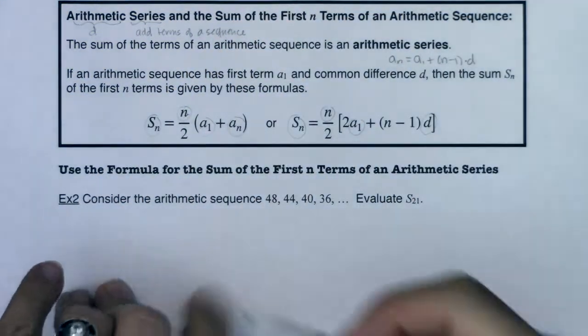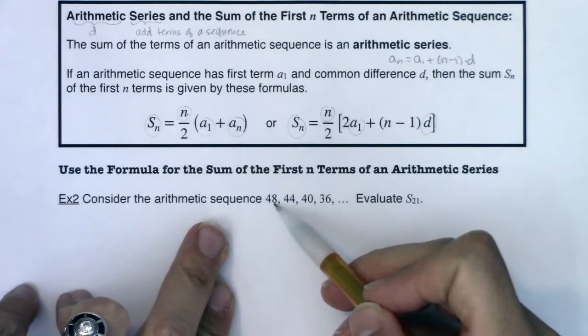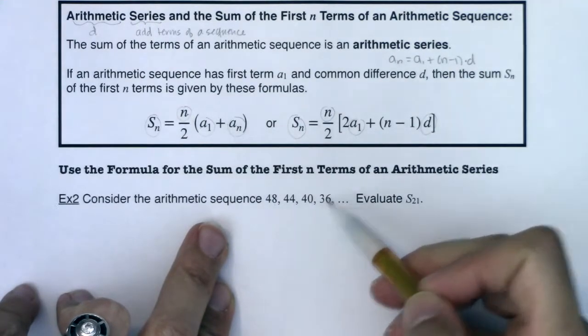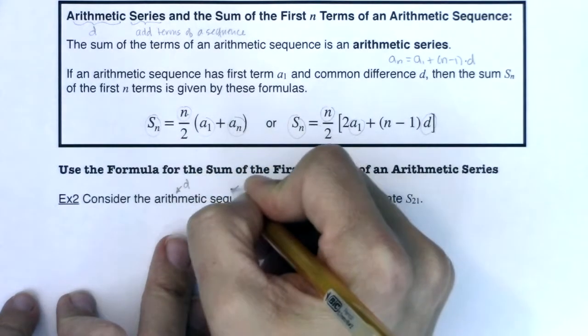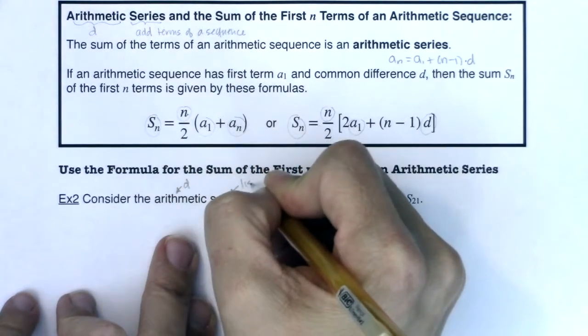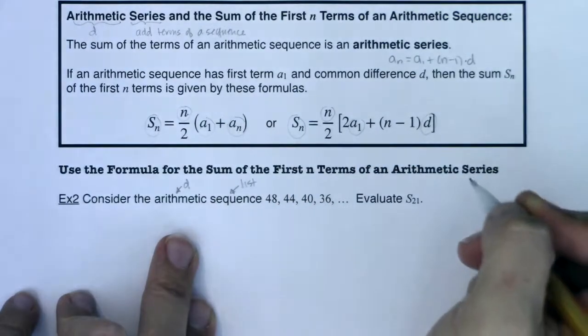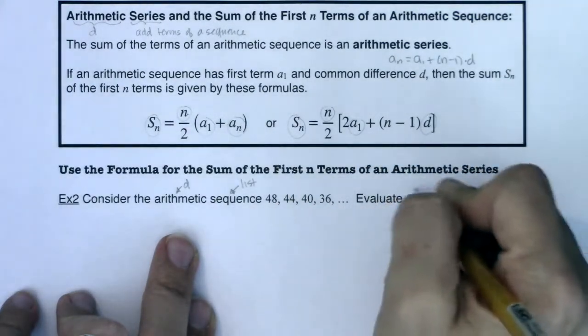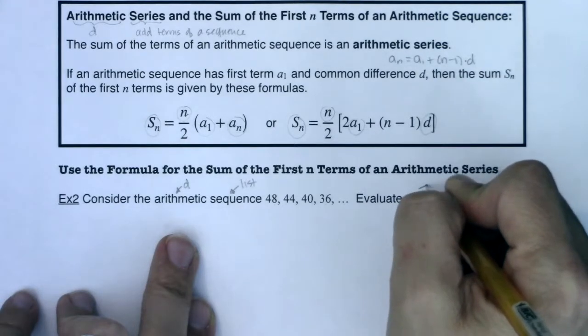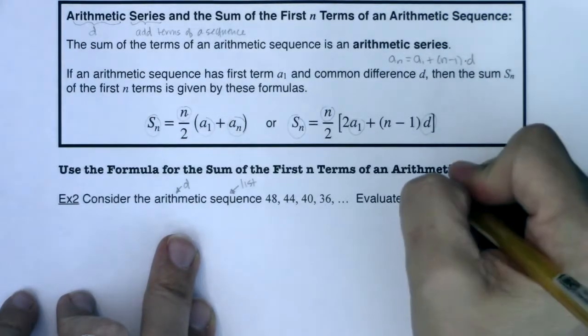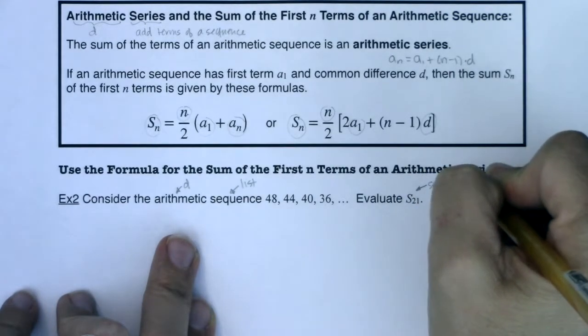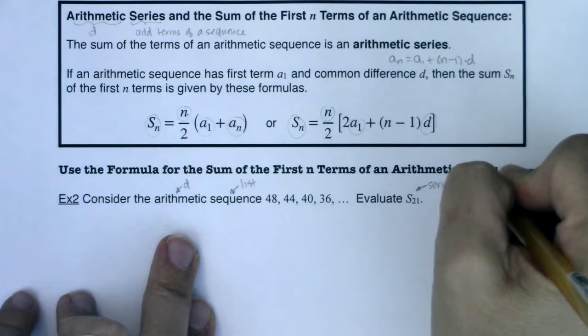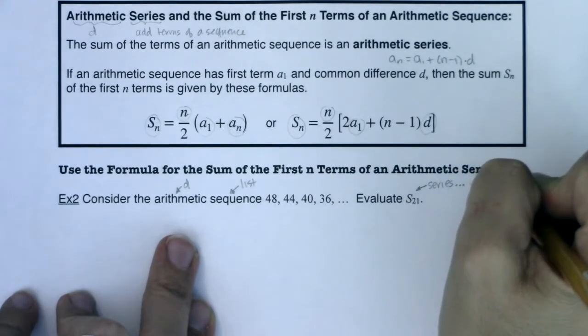So it says, consider the arithmetic sequence 48, 44, 40, 36. So again, I hear arithmetic, and I think d. I hear sequence, and I think list. And sure enough, I do have a list of numbers here. But then it gets changed up. It says evaluate s₂₁. So that is a series. This is telling us to add. It's a series, so add terms of the sequence.